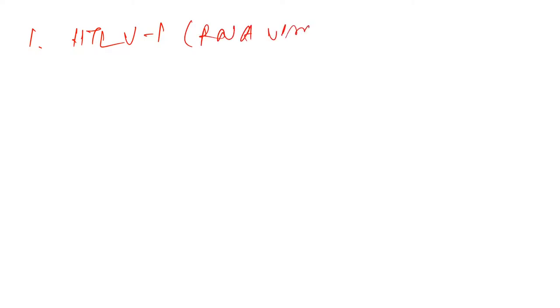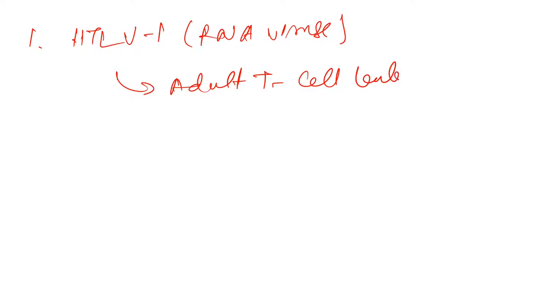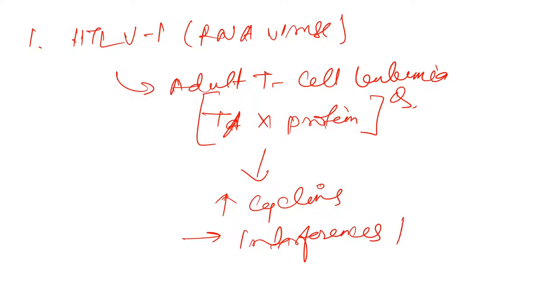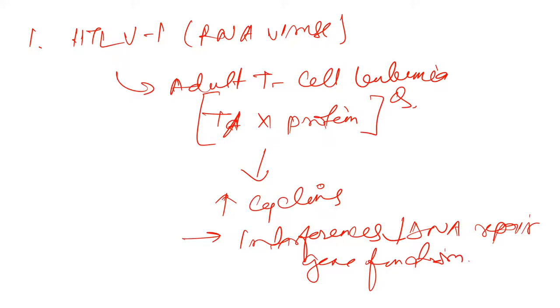First, HTLV-1 — this is an RNA virus. It causes adult T cell leukemia. There is a tax protein — remember this, as it has come in exam questions. The tax protein leads to increased activity of cyclin and this interferes with and decreases DNA repair gene function, ultimately leading to adult T cell leukemia.